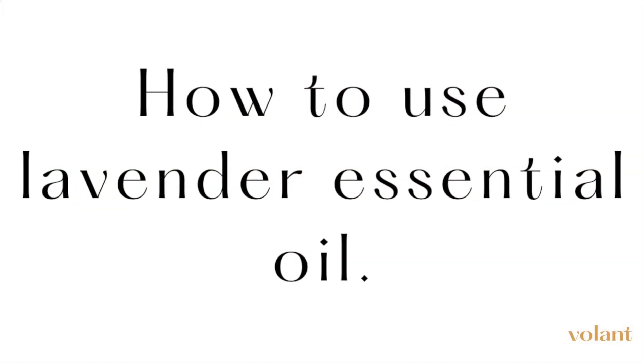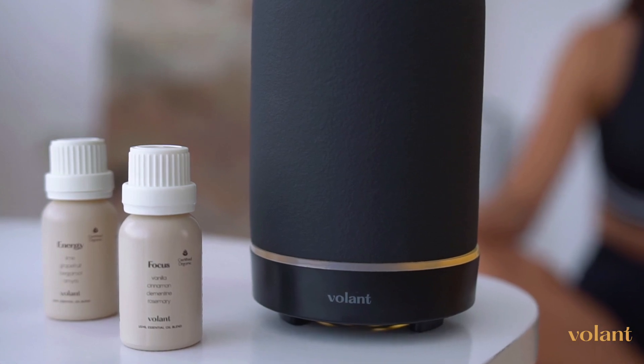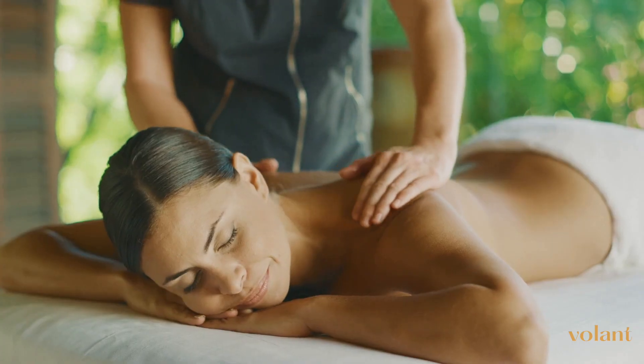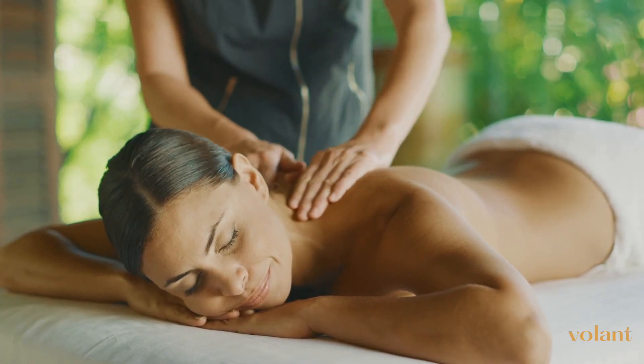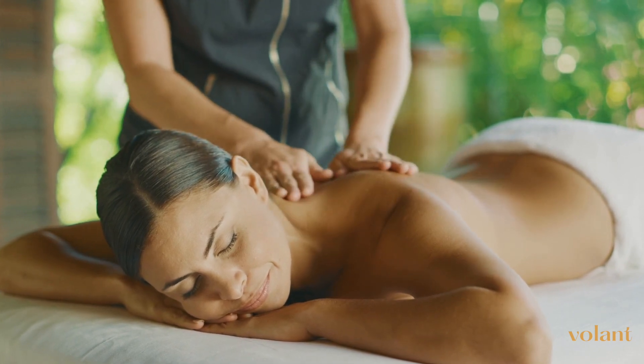Now let's talk about how to use lavender essential oil. It can be used in a variety of ways depending on your intention. For example, if you're looking for a better quality of sleep, you might spray a little bit on your pillow and sheets before bed. Other common ways to use lavender essential oil include aromatherapy massage, topical application, or inhalation through an aroma diffuser.